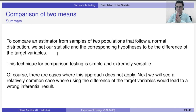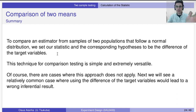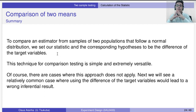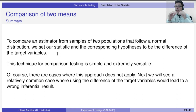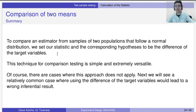To summarize: to compare an estimator from samples of two populations that follow a normal distribution, we set our statistic and the corresponding hypothesis to be the differences of the target values. This technique is very versatile and can be used for many different experiments. You need to test the assumptions — whether values are normal, whether variances are the same — and as we will see in the next video, you need to be careful to ensure there is no dependence between observations of the two samples. See you there.